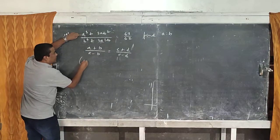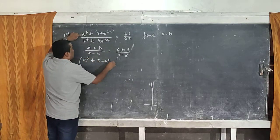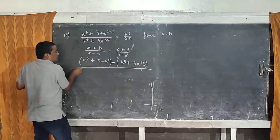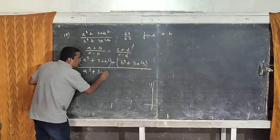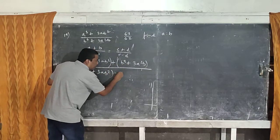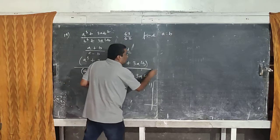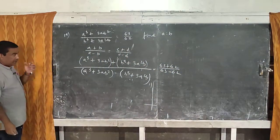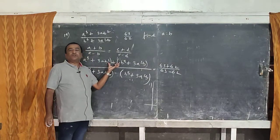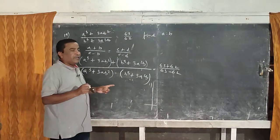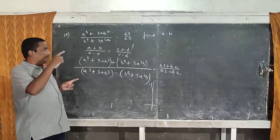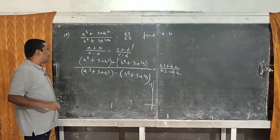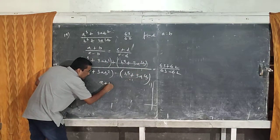Now, a means this everything is a. So, open the bracket and write a³ + 3ab² — this is the (a+b) part — plus b³ + 3a²b, divided by a³ + 3ab² minus b³ + 3a²b, equals 63+62 divided by 63−62. Now from here we apply the formula. Go back to class 7 and 8 where you learned (a+b)³ = a³ + b³ + 3ab(a+b), which expands to a³ + b³ + 3a²b + 3ab². This entire numerator can be written as (a+b)³.